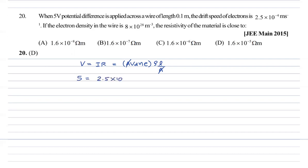Drift speed is 2.5 × 10^-4, density of electrons is 8 × 10^28, electron charge is 1.6 × 10^-19, resistivity we need to find. Length of wire is 0.1. So 5 equals 2.5 × 10^-4 times 8 × 10^28 times 1.6 × 10^-19 times rho times 0.1.